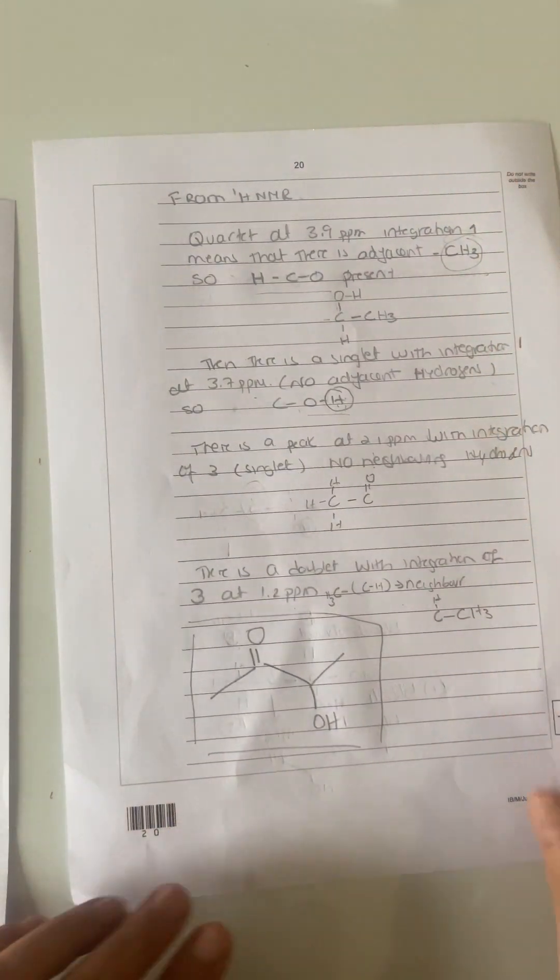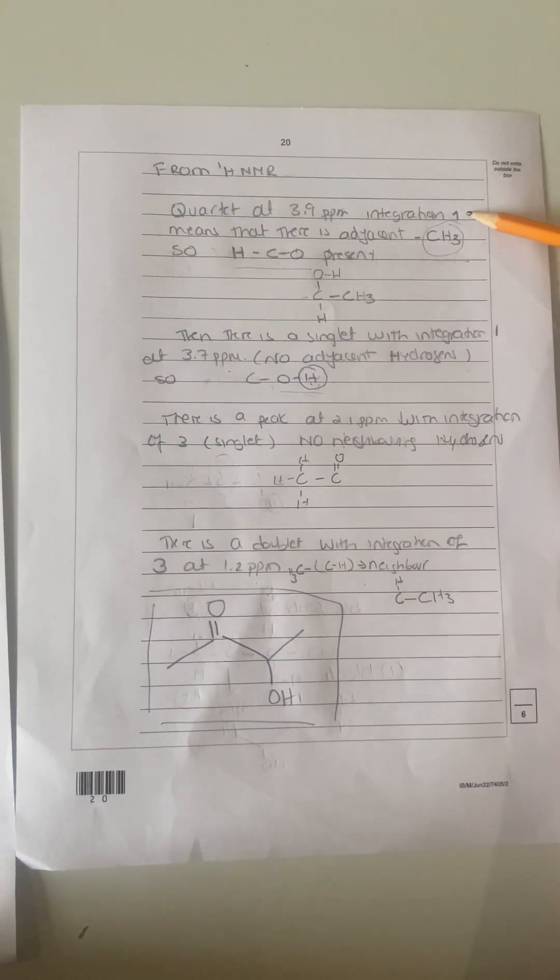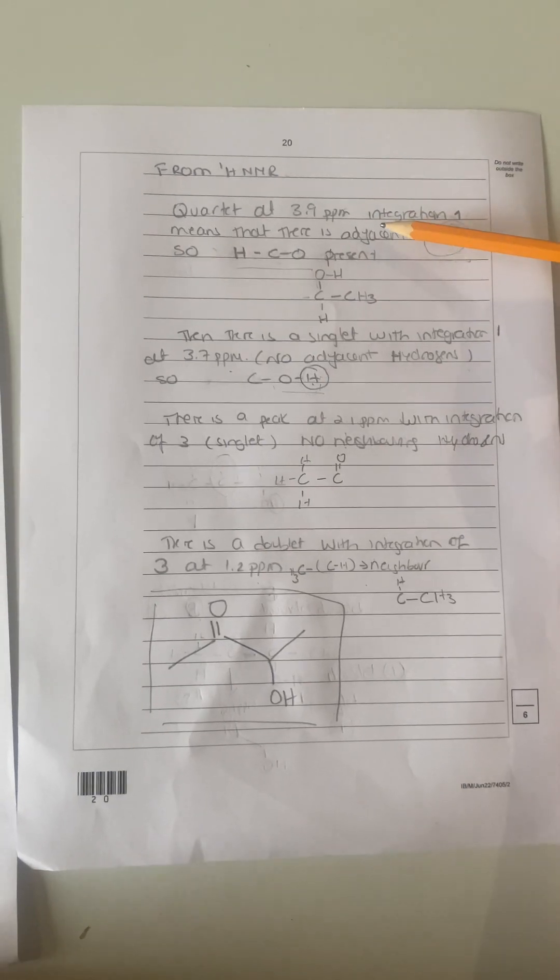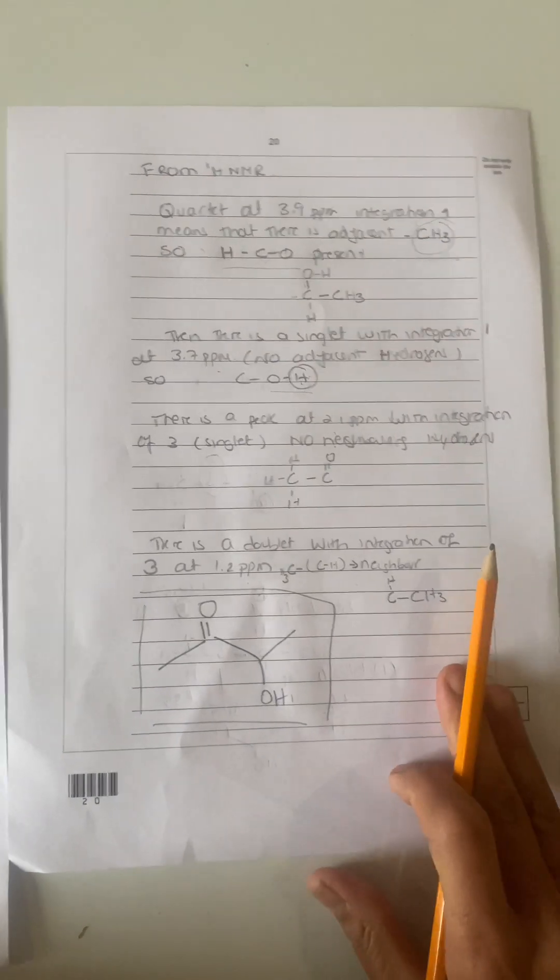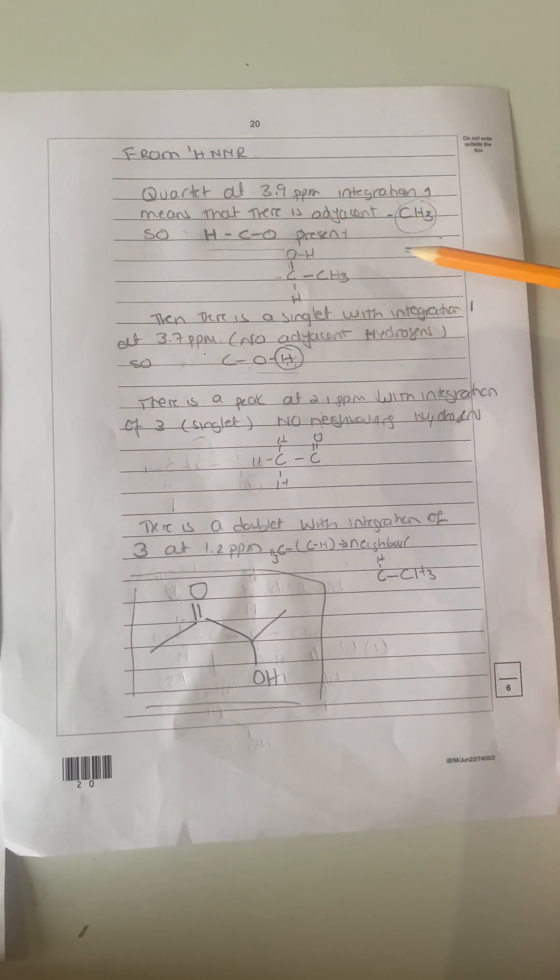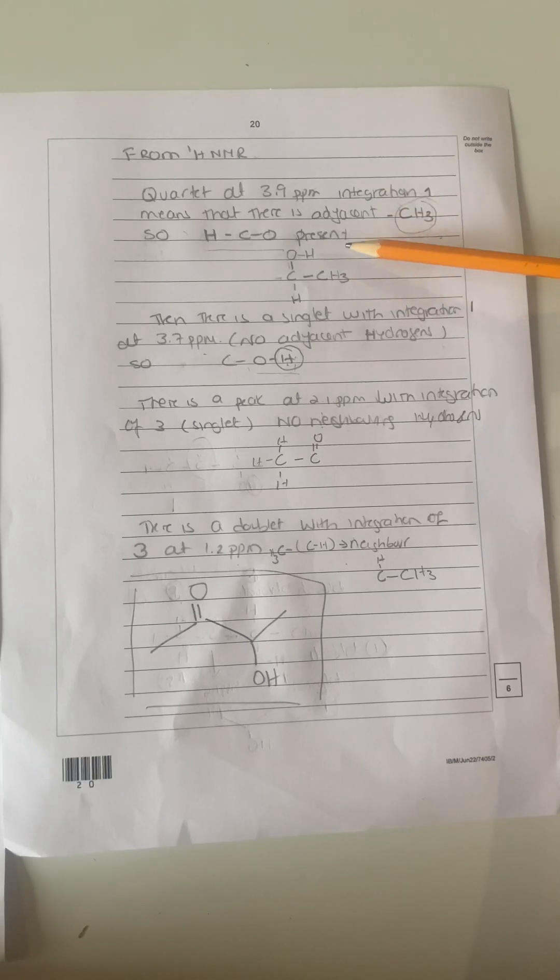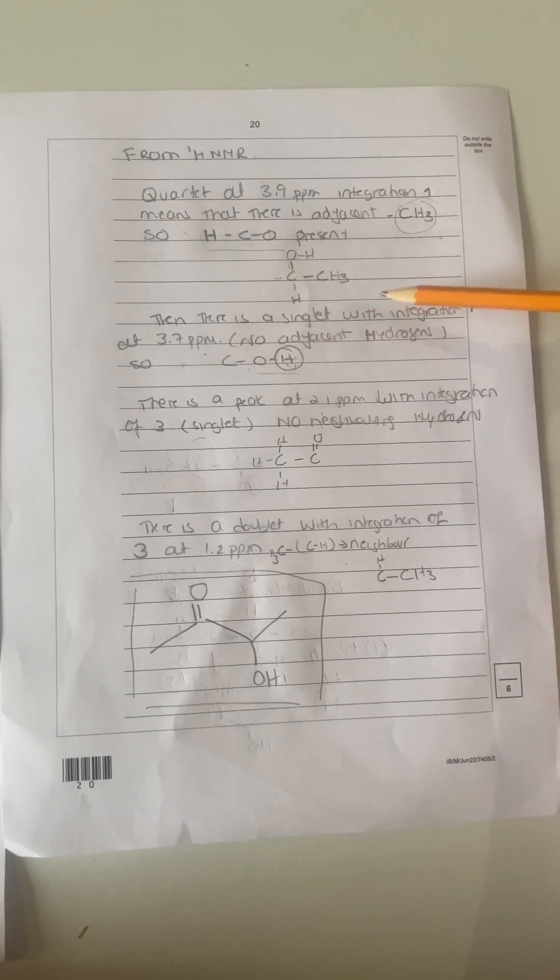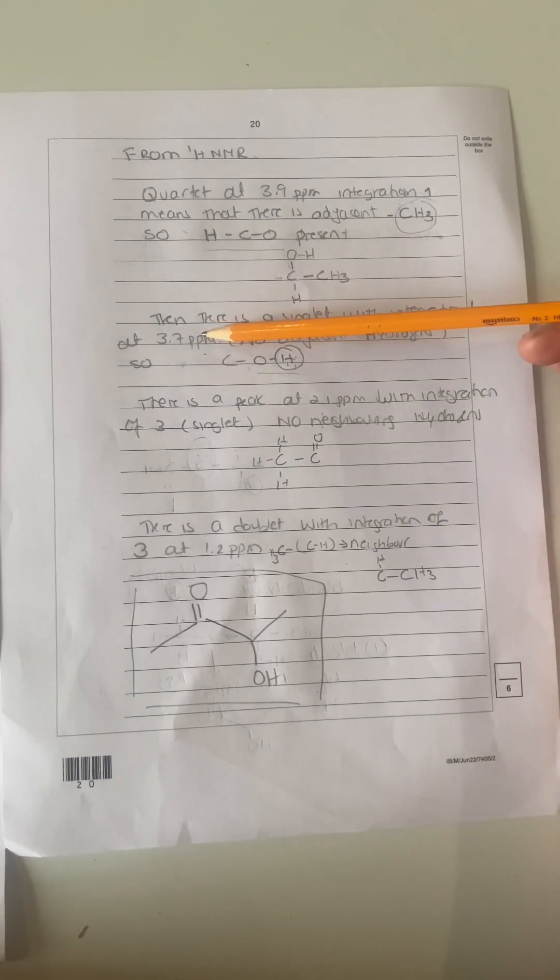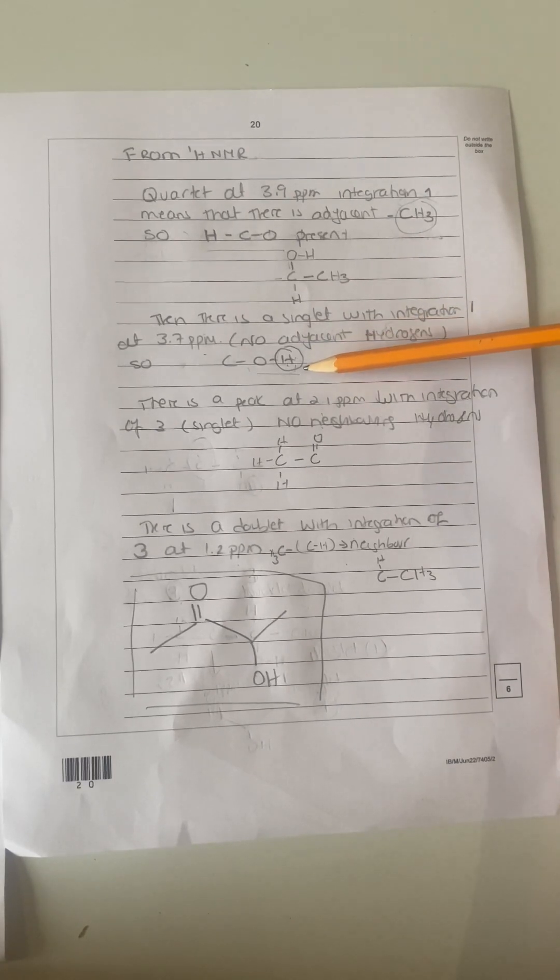From proton NMR, the quartet at 3.9 with integration 1 means that there is adjacent CH3 present, so therefore it's for HCO present. This will be this bit here. There's also a singlet with integration 1 at 3.7, which has no adjacent hydrogens, we think is that one there.